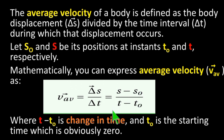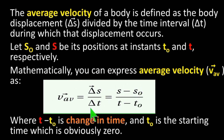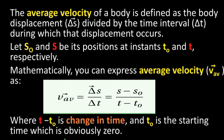Change in time means final time minus initial time, where T minus T-naught is change in time. Final position minus initial position divided by final time minus initial time. T-naught is the starting time, which is obviously zero.